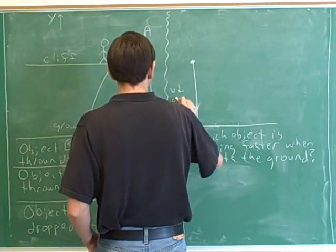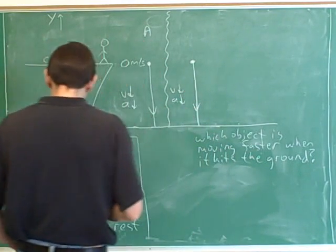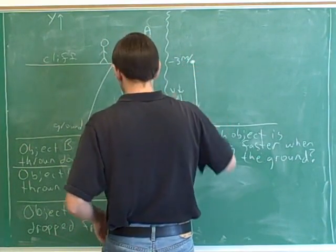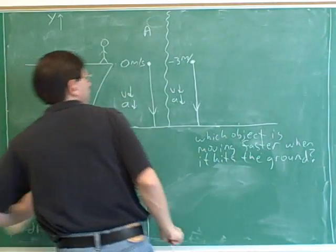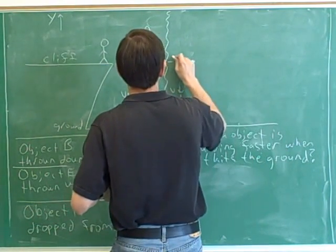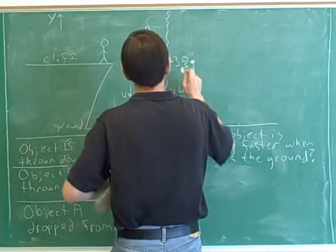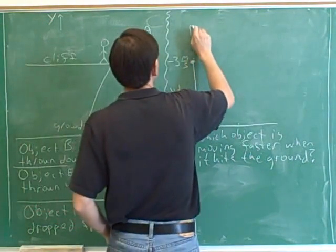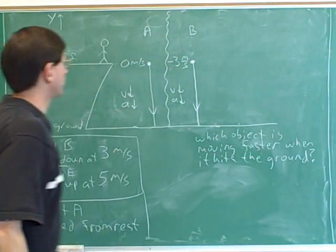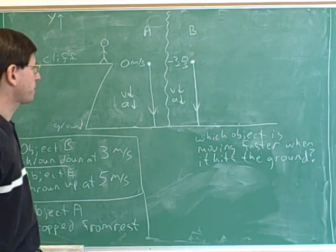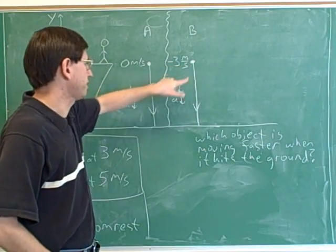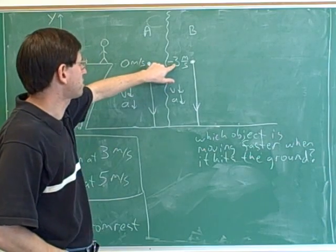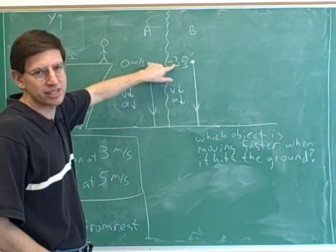Object B has a velocity that's down and an acceleration that's down. It was thrown down at a velocity of negative 3 meters per second, choosing up as our positive direction. Object A is starting from rest and speeding up, and object B is starting from a speed of 3 meters per second and speeding up.